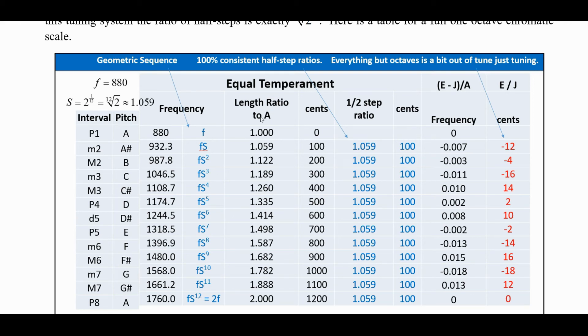And so we can get the length ratio to A there, which is not a really nice fraction now. And one half step is 100 cents, and so you can see the half step ratios here, of course, all perfectly the same. They're perfectly the twelfth root of 2 each. So we get a very even scale, but it's a little bit out of tune with what's called just tuning, which is kind of a variation on the Pythagorean tuning.